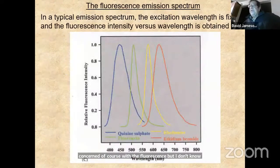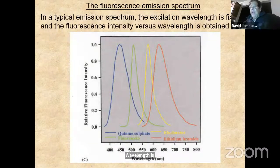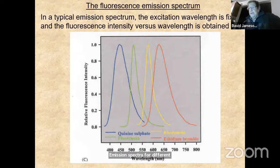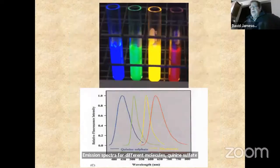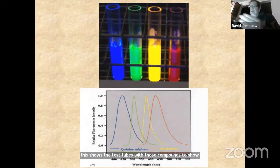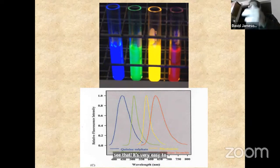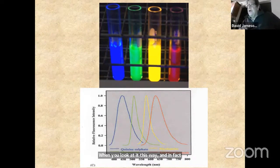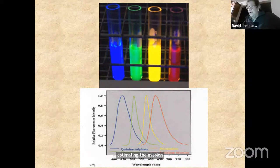For a typical emission spectrum, the excitation wavelength is fixed and fluorescence intensity versus wavelength is obtained. Here we see four emission spectra for different molecules — quinine sulfate, fluorescein, rhodamine, and ethidium bromide — along with test tubes showing how the color perceived by the eye correlates with the emission spectra. It's very easy to distinguish the different colors. When you've done fluorescence for a long time, you get very good at estimating the emission maximum just by looking at the color.